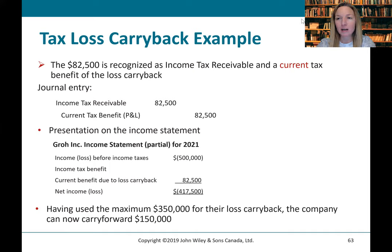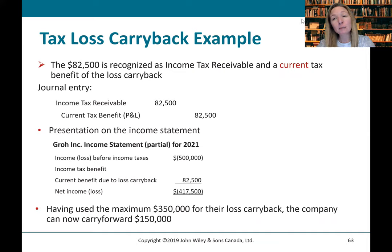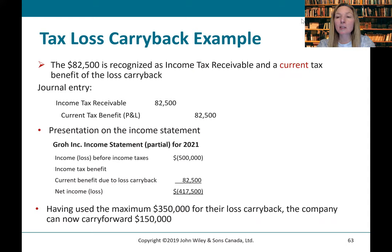When you recognize the benefit of a tax loss carryback, it's always a certain benefit — the past is known. We know whether we paid tax or not. In this case, we can claim back $82,500 of tax paid in the immediately preceding three years. The journal entry is: debit Income Tax Receivable (a current asset on our statement of financial position, where we'll actually receive cash from the government) for $82,500, and credit Current Tax Benefit through our income statement. This is a revenue account or contra expense going through the tax section of our income statement.